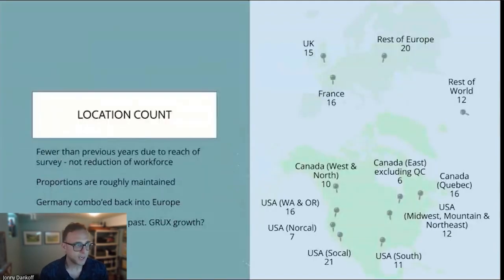Let's hop in to the results, looking first at where people work. Count by location, it's always where we start. You'll see smaller numbers here than previous years everywhere. Obviously we don't think this is due to a massive reduction in the workforce; it's part of the outcome of having a smaller sample, though the proportions are roughly maintained. We had fewer than five this year in Germany, which means we had to combo it back into Europe. We had recently split it out because there were enough German researchers, but we are re-merging them this year. One interesting point to note here is that despite every other number going down, rest of the world has gone up. The best guess that I have is that this comes from some of the work that the GRUX Discord has been doing growing their membership.